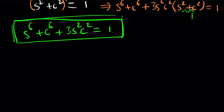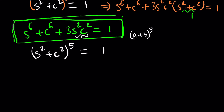Now, since we know the tenth powers, why not raise s squared plus c squared to the fifth power? The binomial coefficients from Pascal's triangle for the fifth power are 1, 5, 10, 10, 5, 1 — the combinatorial coefficients 5 choose 0 through 5 choose 5. Expanding gives: s to the tenth plus 5 s to the eighth c squared, plus 10 s to the sixth c to the fourth, plus 10 s to the fourth c to the sixth, plus 5 s squared c to the eighth, plus c to the tenth, all equal to 1.